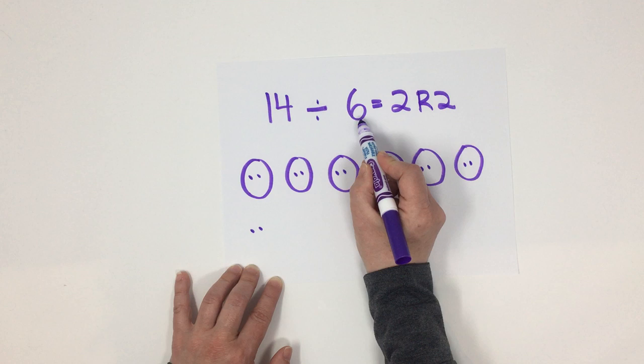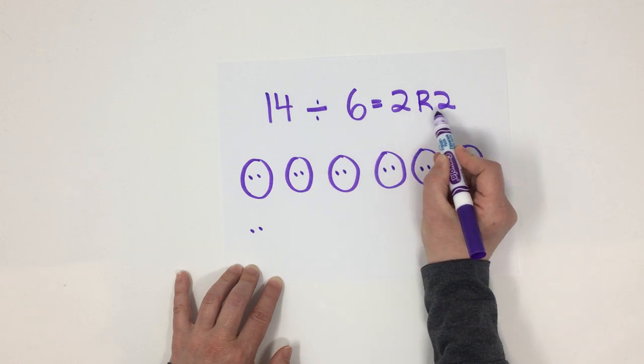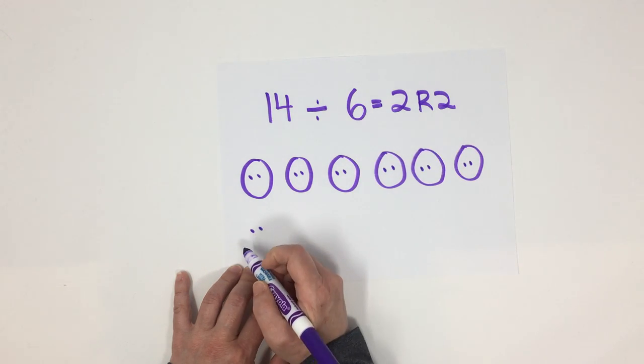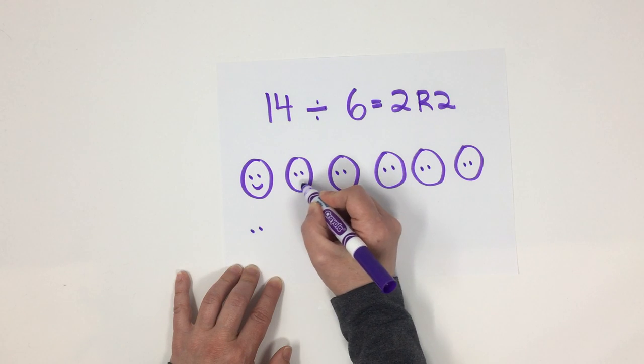14 divisé par 6 égale 2, reste 2. And if we share our candies like that, everybody will be happy.